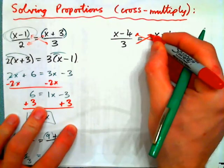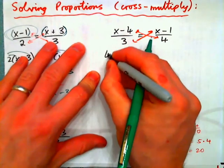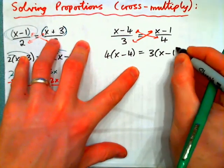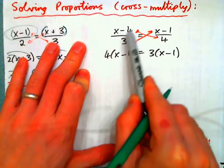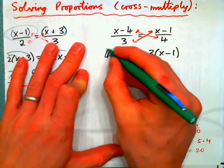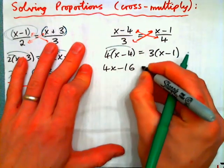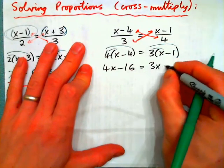Cross multiply. And we should have 4 times x minus 4 equals 3 times x minus 1. So this 4 is multiplied by the entire top of this fraction. This 3 multiplies by the entire top of this fraction. Now we distribute. And we get 4x minus 16 equals, distribute the 3, 3x minus 3.